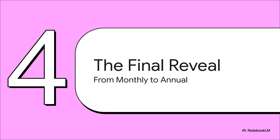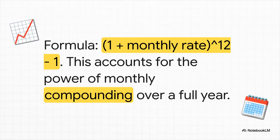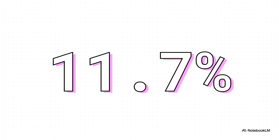This is the last and maybe most important step. And to do that, we find what's called the effective annual rate. Now, we can't just multiply our monthly rate by 12, because that would ignore the magic of compounding, you know, where your interest starts earning its own interest. This formula takes all of that into account. And when we run that final calculation, we get 11.7%.